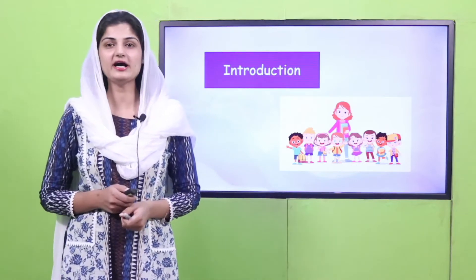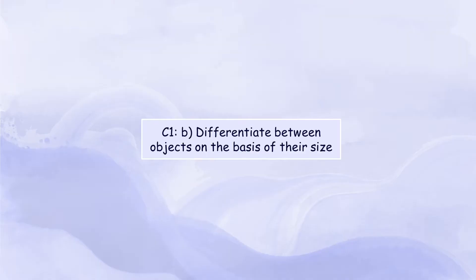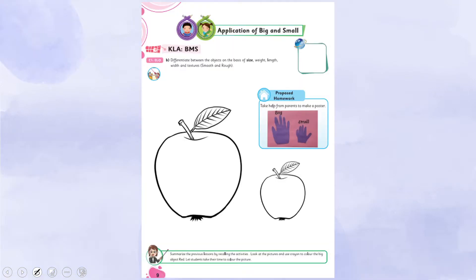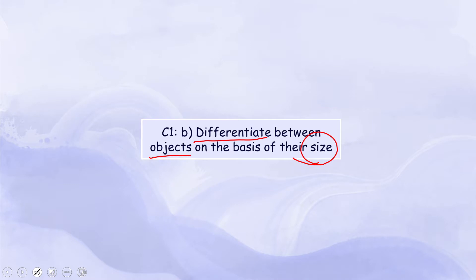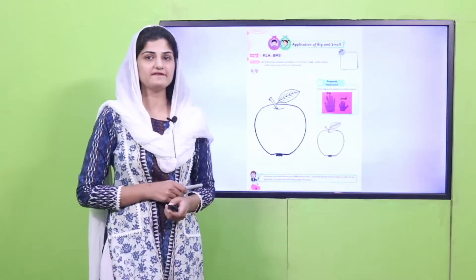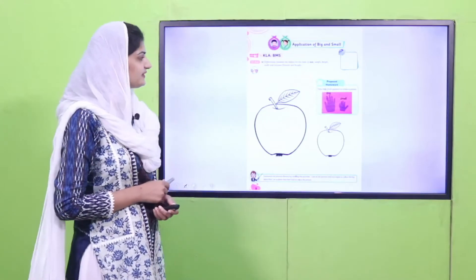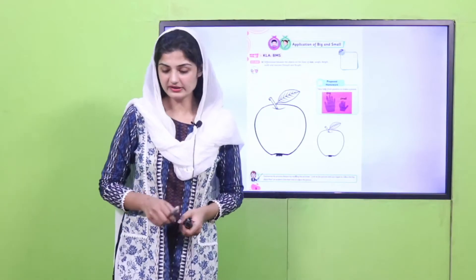Before we start, let me give a few instructions. Today we are going to differentiate between objects on the basis of their size. We are also going to talk about your writing skills and playgroups. Can you tell me which activities we have done in the previous lesson?